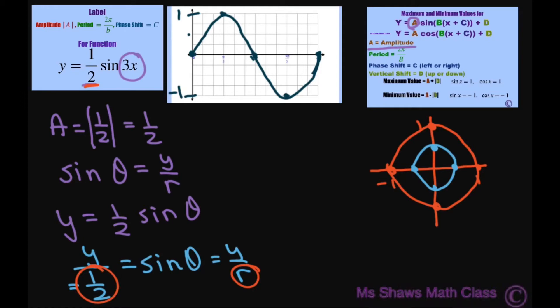So therefore your r is one-half. So it's the same. And then of course your radius always has to be positive. So therefore there's that. And so if you look at the graph, the same thing's going to happen.